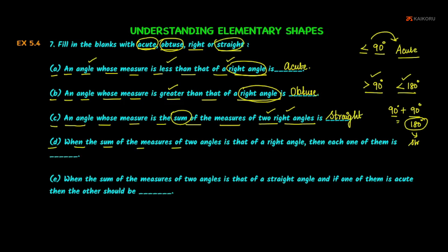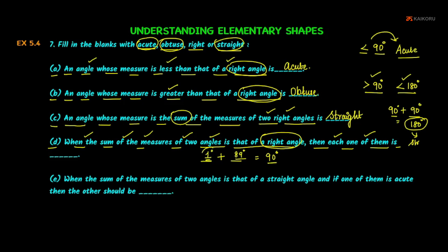Part (d): when the sum of the measures of two angles is that of a right angle, what is each angle called? The sum of the two angles equals 90 degrees — a right angle. Each of the two angles that add up to 90 degrees would be acute angles.